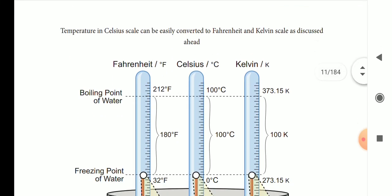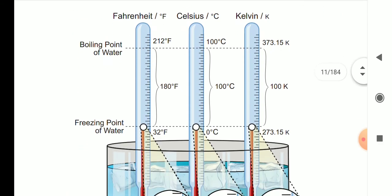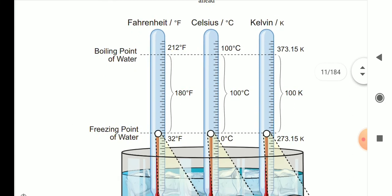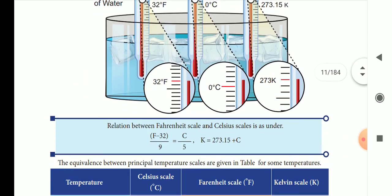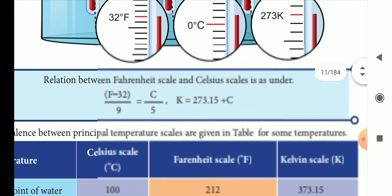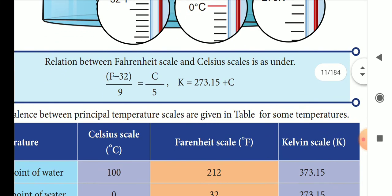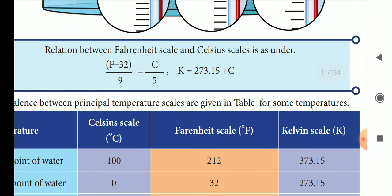Temperature in Celsius can be easily converted to Fahrenheit and Kelvin. The conversion formula is: F minus 32 divided by 9 is equal to C divided by 5. K is equal to C plus 273.15.